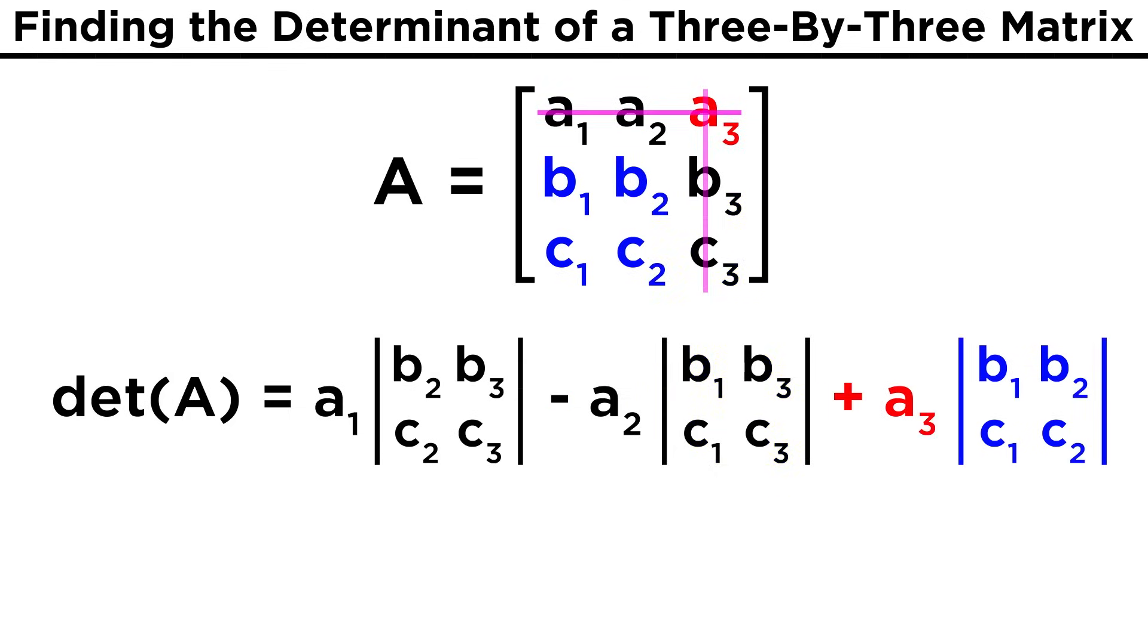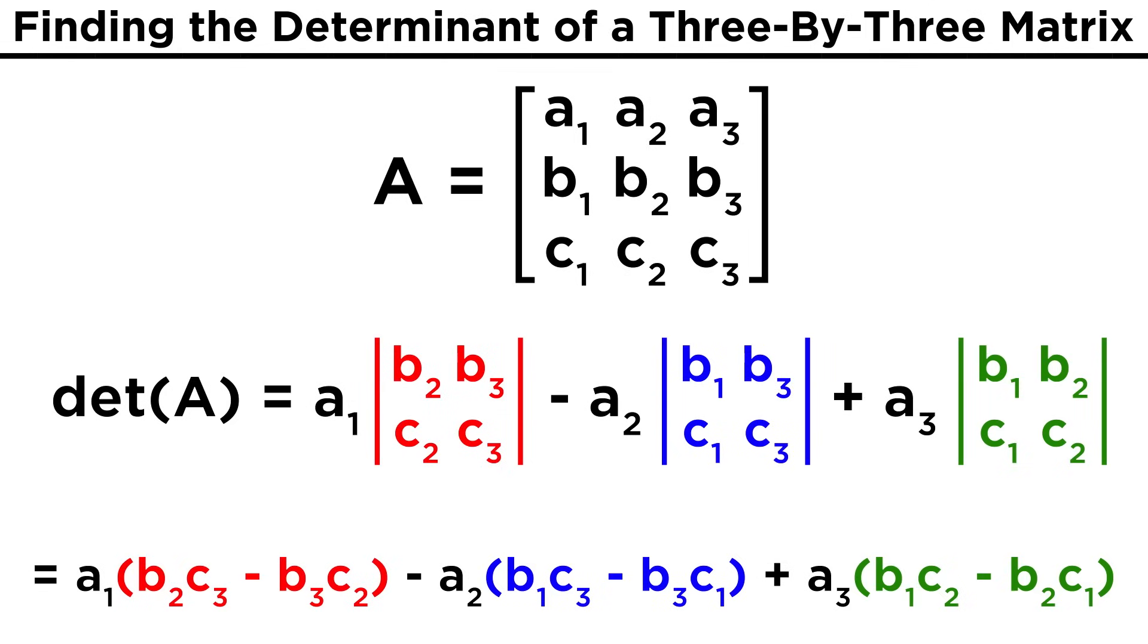And to that we add A3 times the determinant of one more two by two matrix, containing B1, B2, C1, and C2. Pay close attention to the fact that we used a minus sign here, and then a plus sign here, as this rule must be followed. From here, we just evaluate these three simple determinants using the method we already know for two by two matrices. That would give us some products to evaluate, and we simplify until we have a final scalar value.